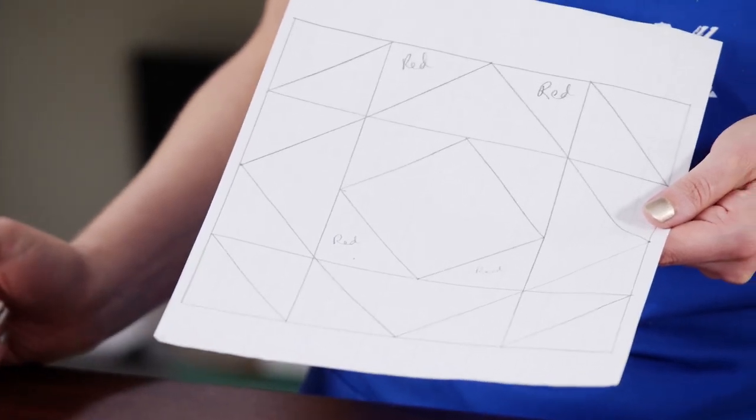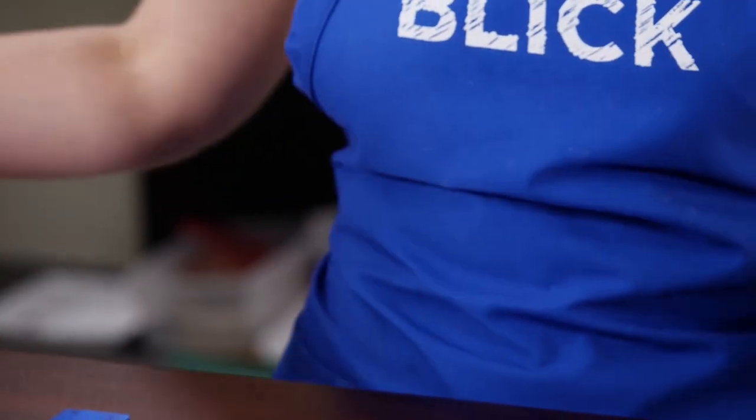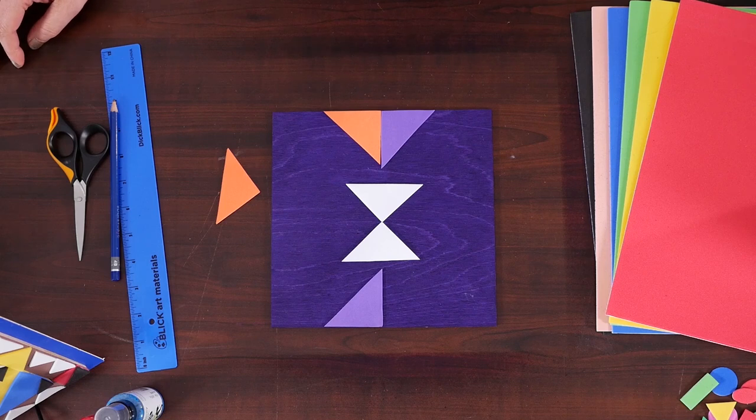You can sketch a quilt square on gridded paper or just start adhering geometric shapes to the background of the wood panel. Be sure to leave areas of the colored wood panel exposed.